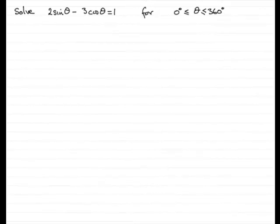Hi, welcome to another example in my series on solving trig equations. Now in this example, we've got to solve 2 sine theta minus 3 cos theta equals 1 for theta between 0 to 360 degrees inclusive.